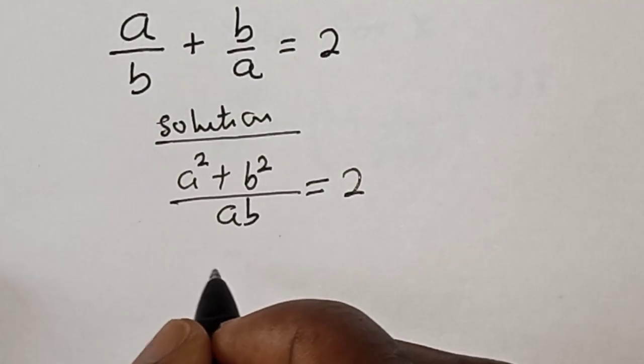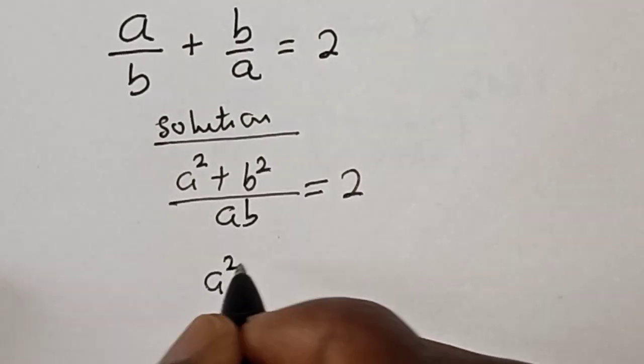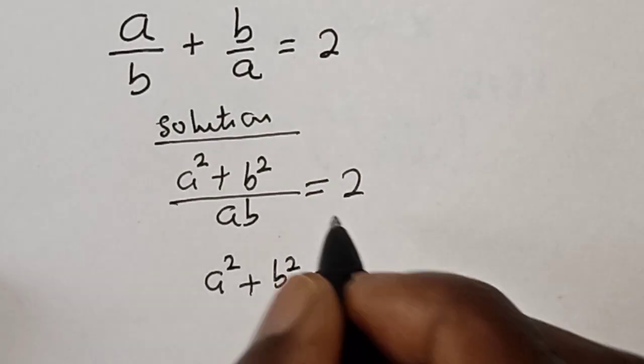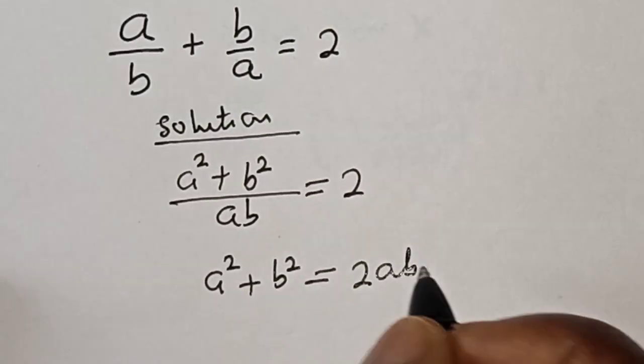Then we have a squared, if you cross multiply, plus b squared is equal to 2 times ab. That is 2ab.